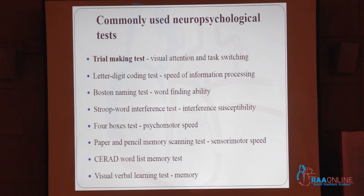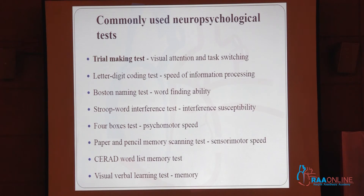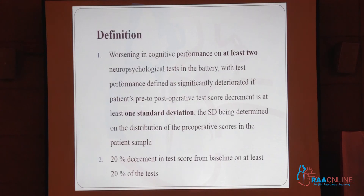These are the commonly used neuropsychological tests, among which the trail-making test is the most commonly used. In all these neuropsychological tests, many domains such as visual tasking, visual ability, word-finding ability, memory, and sensorimotor speed, and many others are assessed.